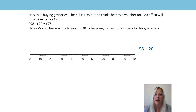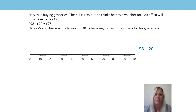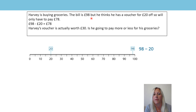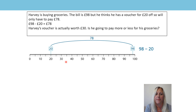Harvey's buying groceries. The bill is £98, but he thinks he has a voucher for £20 off, so he'll only have to pay £78. £98 subtract £20 equals £78. Let's put it on a number line to help us. So first of all, I've got my minuend here — £98 — because the bill to start with is £98. He thinks he's got a voucher for £20, so my subtrahend £20 is here. The difference would be £78.